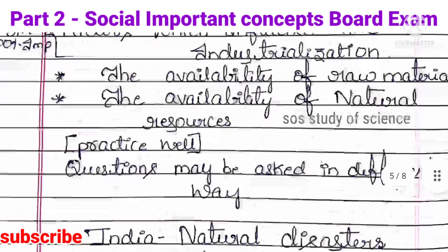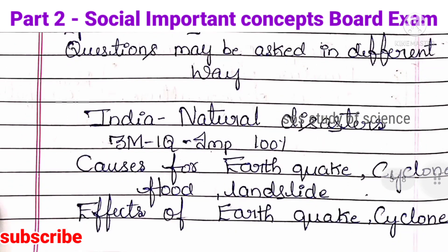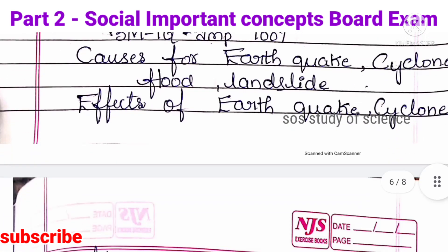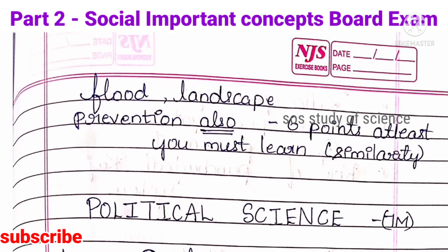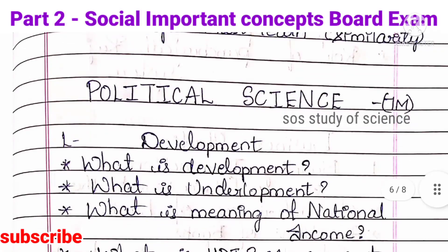Next — India Natural Disasters. From this lesson, one 3-mark question will definitely be asked. You have to study: causes for earthquake, causes for cyclone, causes for flood, and causes for landslide. Similarly, effects of earthquake, effects of cyclone, effects of flood, and effects of landslide — and also the prevention of all these things. Learn at least 6 points from each. Note the similar points between them and practice very well. This is all about geography.